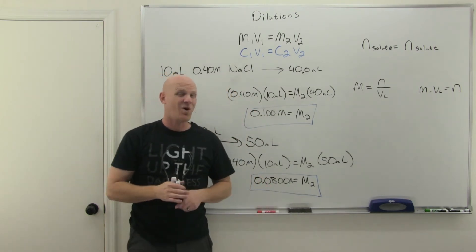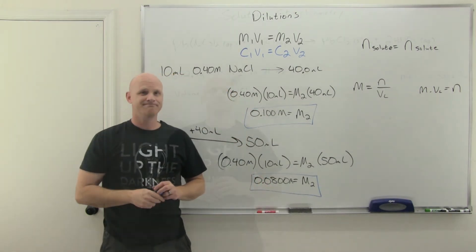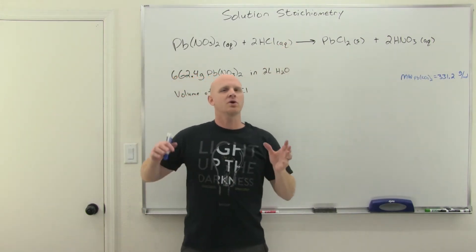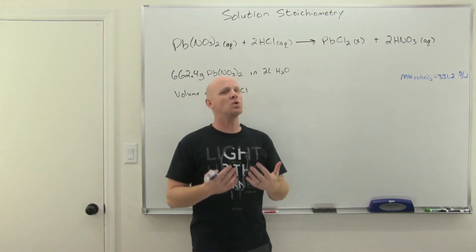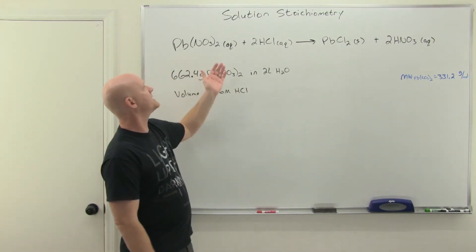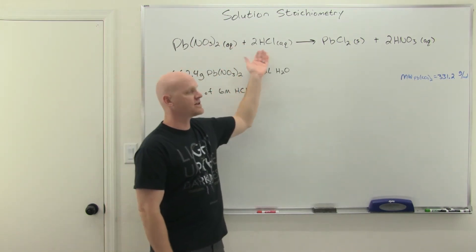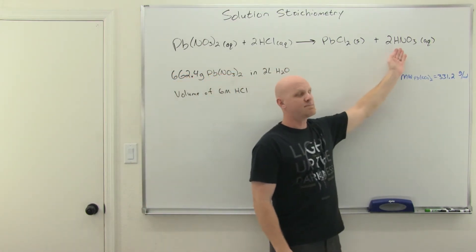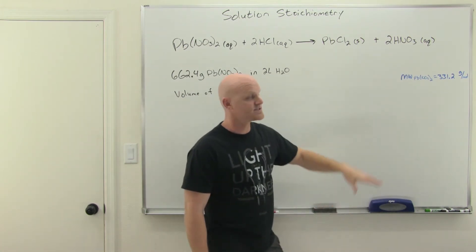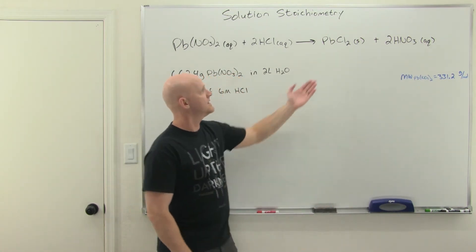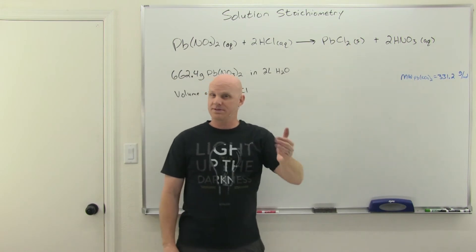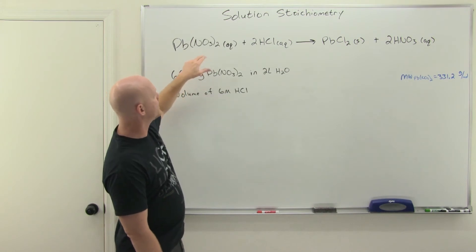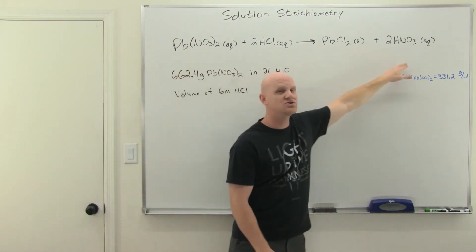That's all there is to dilutions. Now let's talk about solution stoichiometry. Stoichiometry at its heart is these mole-to-mole ratios. Here we've got a reaction of aqueous lead nitrate with aqueous hydrochloric acid to form solid lead(II) chloride and aqueous nitric acid — a double replacement precipitation reaction. The stoichiometry is a 1:2:1:2 ratio.